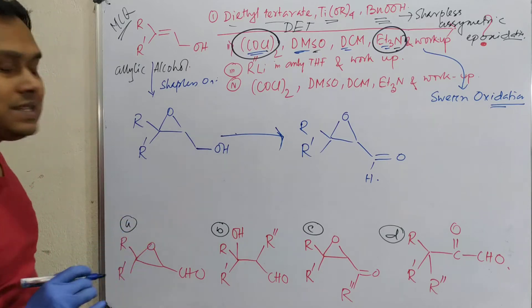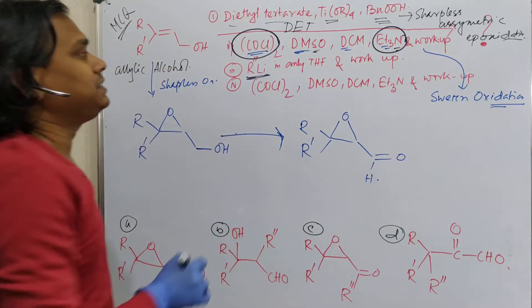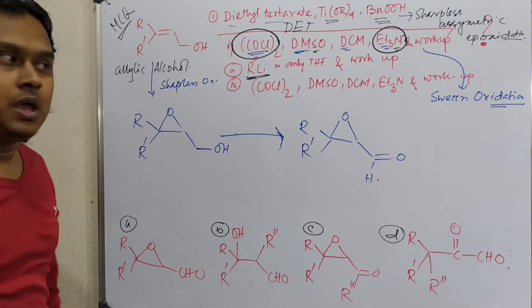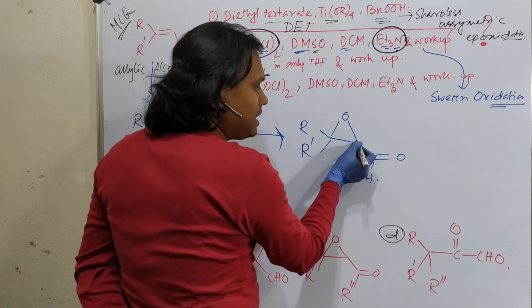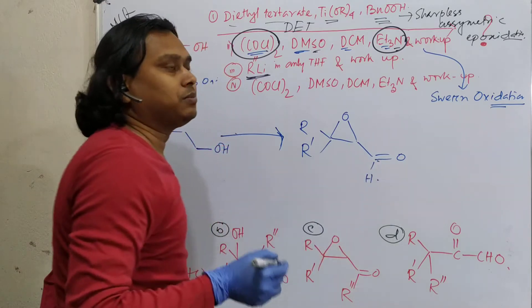In the next step, what is given? See, in the next step, given RLi in anhydrous THF, then workup. So question, both reactions possible. RLi can open this epoxide or attack this carbonyl.